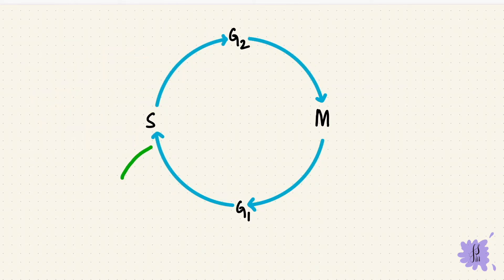There are checkpoints in the cycle. They're sort of like guards to make sure that things are going smoothly. These are between the phases of the cycle. There's a G1S checkpoint and a G2M checkpoint. During mitosis, there's another checkpoint, but I'll get to that a little later.